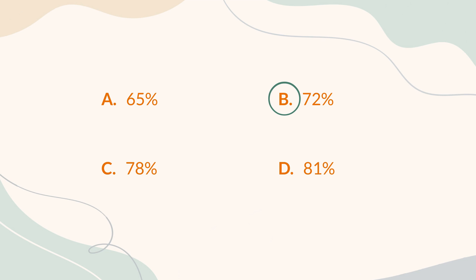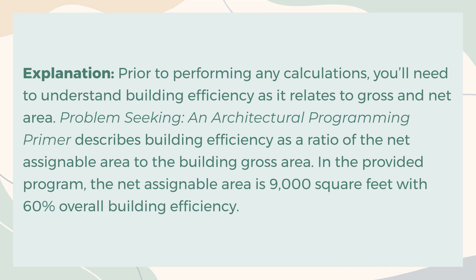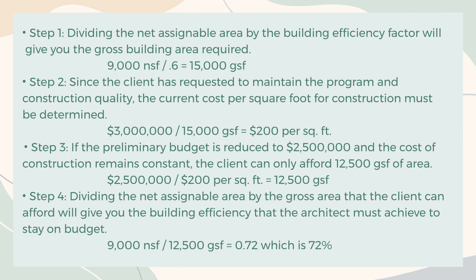The correct answer is B. 72%. Explanation: Prior to performing any calculations, you'll need to understand building efficiency as it relates to gross and net area. Problem Seeking, an architectural programming primer, describes building efficiency as a ratio of the net assignable area to the building gross area. In the provided program, the net assignable area is 9,000 square feet with 60% overall building efficiency. Step 1: Dividing the net assignable area by the building efficiency factor gives the gross building area required. 9,000 net square feet divided by 0.6 equals 15,000 gross square feet. Step 2: Since the client has requested to maintain the program and construction quality, the current cost per square foot must be determined. $3,000,000 divided by 15,000 gross square feet equals $200 per square foot.